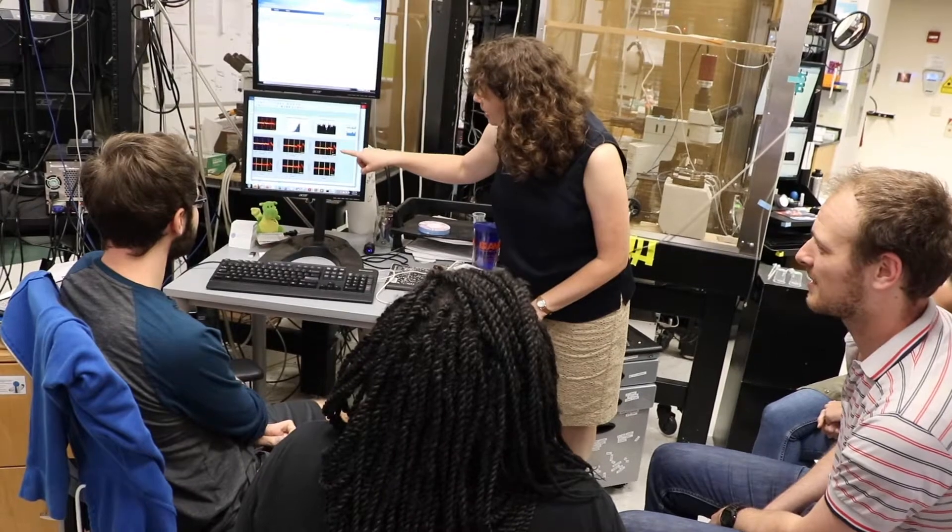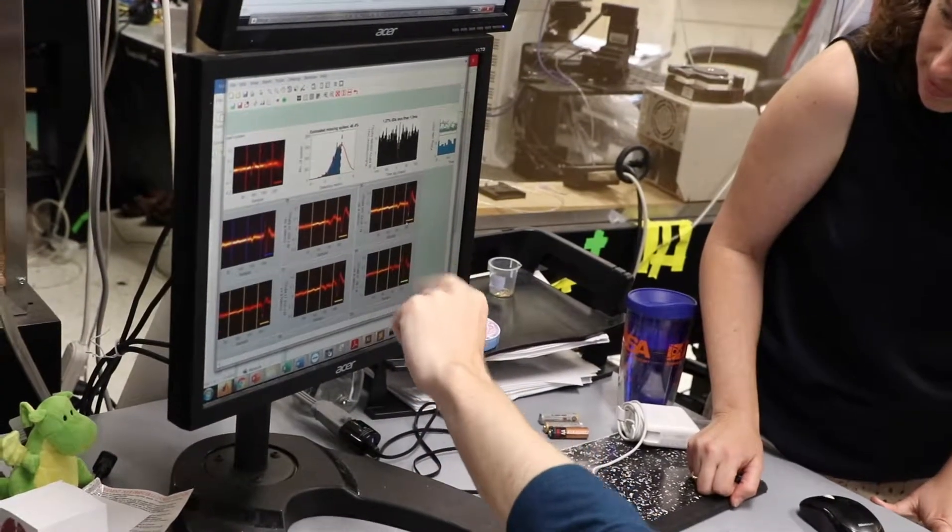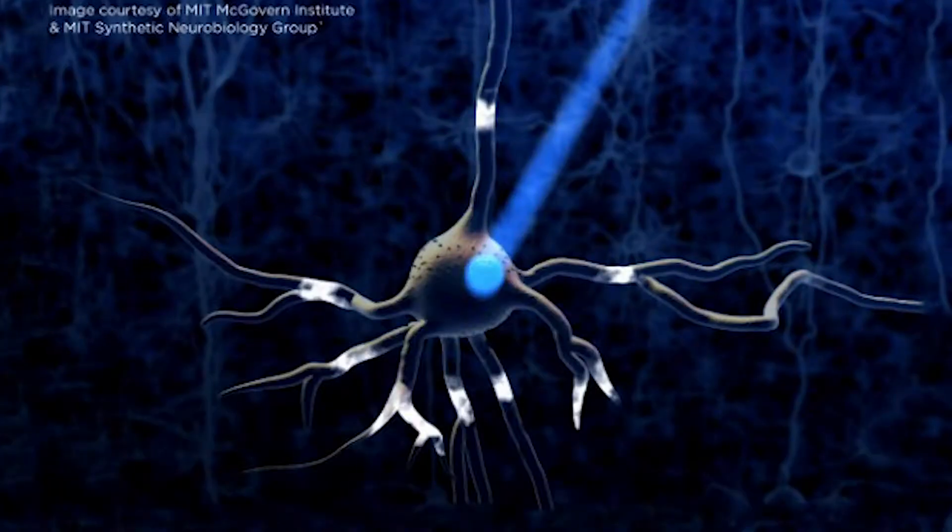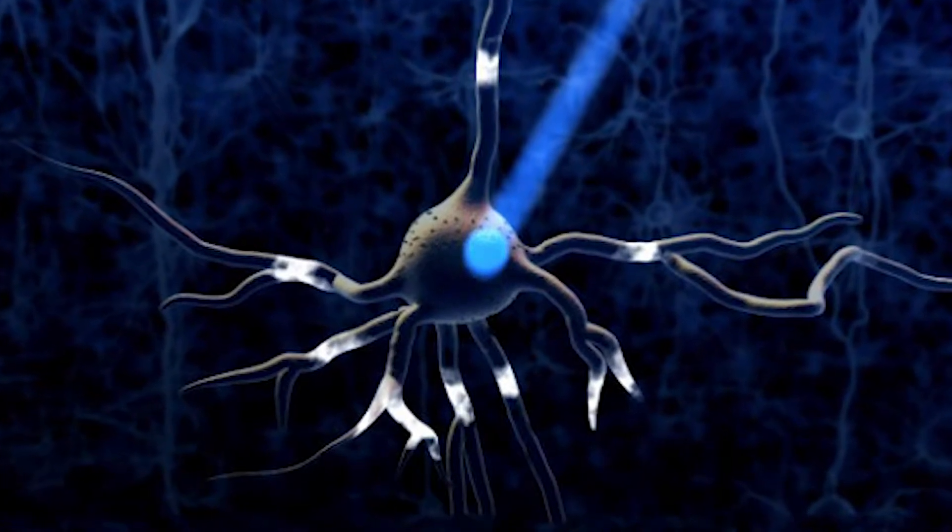My lab uses mice because there have been a number of advances in genetic and recombinant DNA technology. This technique is called optogenetics, so we can essentially turn on and off the activity of specific populations of cells by flashing light.